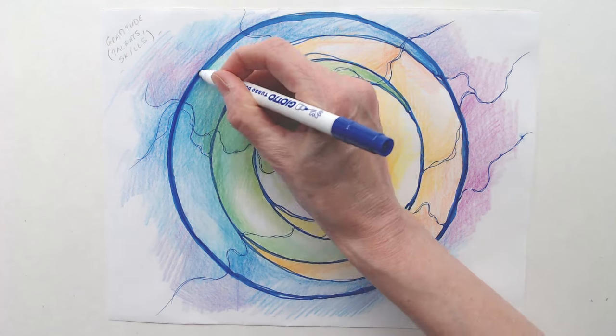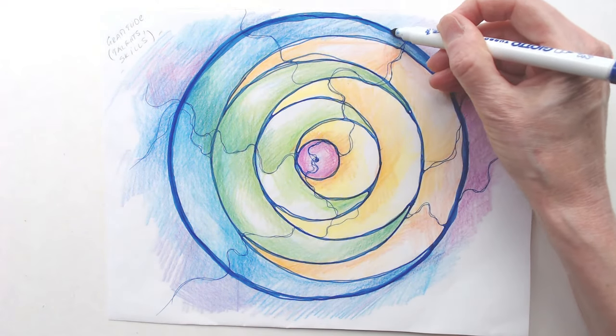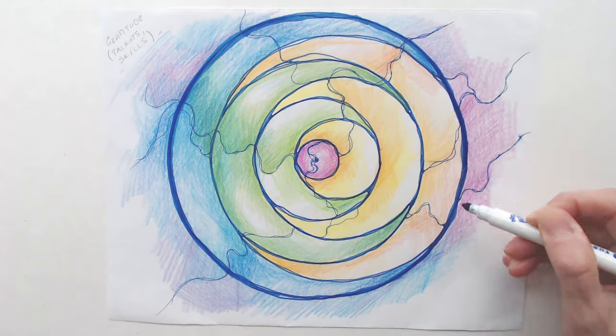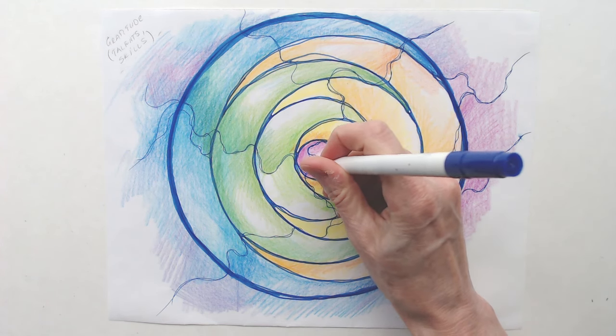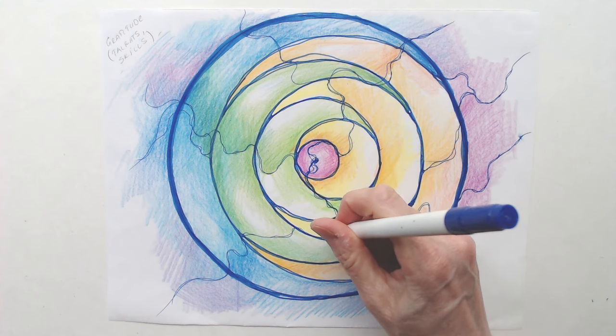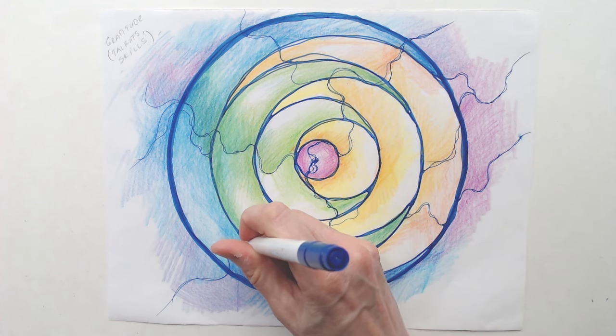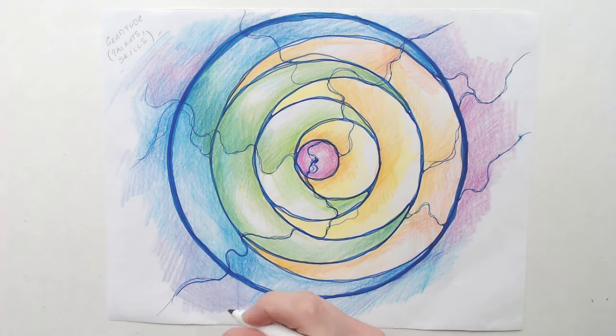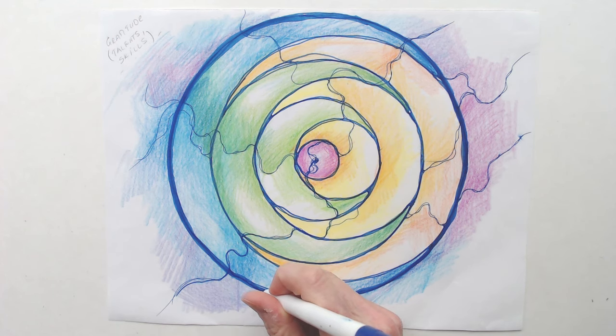Brown is associated with stability, reliability, and grounding. It connects us to the earth and helps us feel secure and rooted. Brown grounds me and strengthens my connection to the earth.